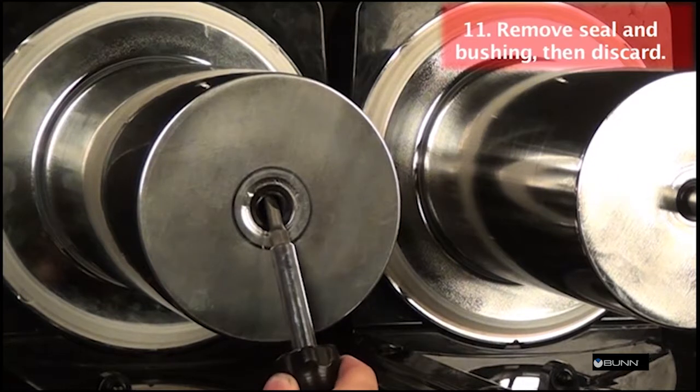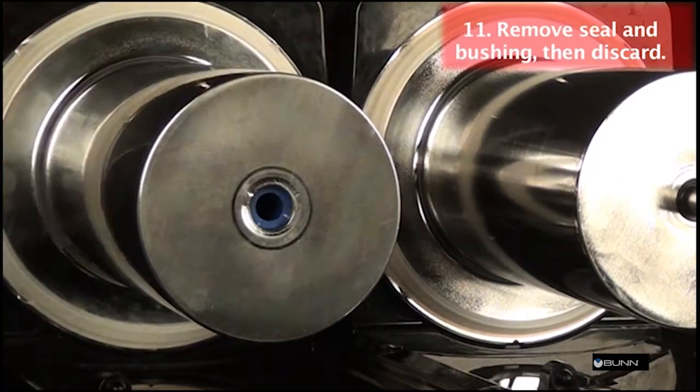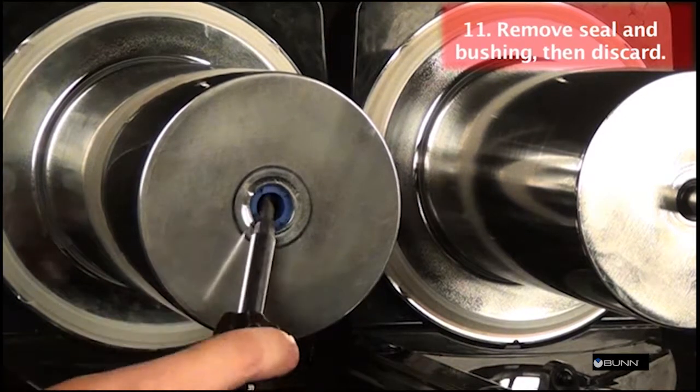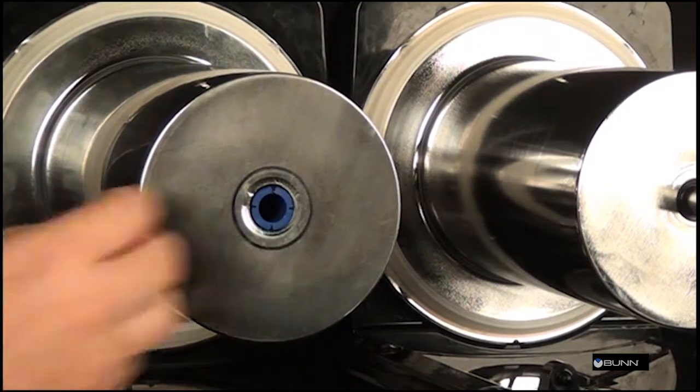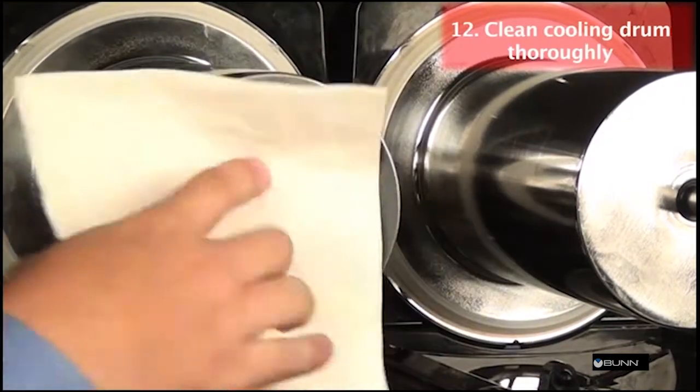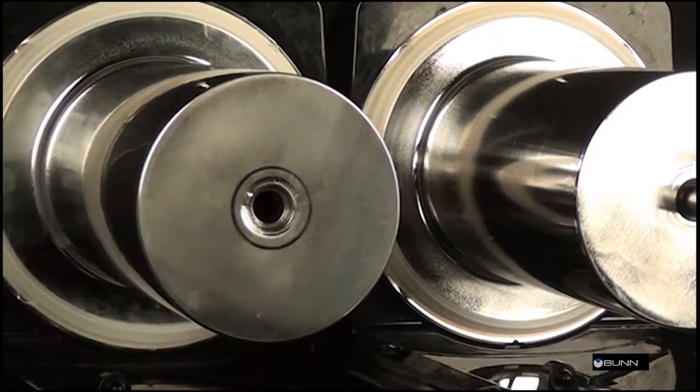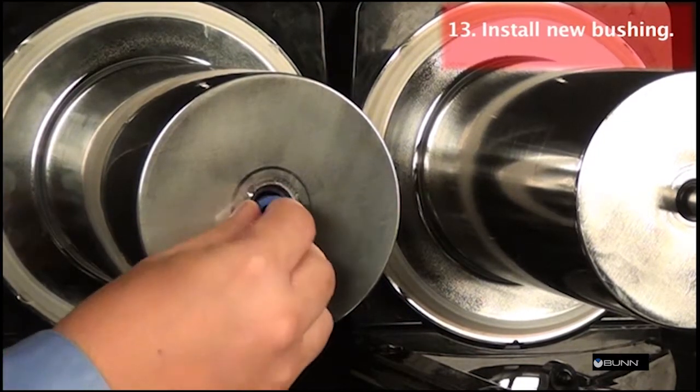From the front of dispenser, remove the seal and blue bushing from cooling drum and discard. Clean seal and bushing surfaces of the cooling drum very thoroughly. Lubricant is not required on any of the seals or bushings.